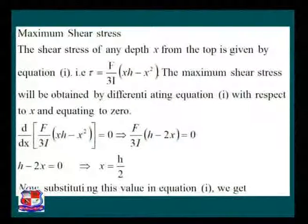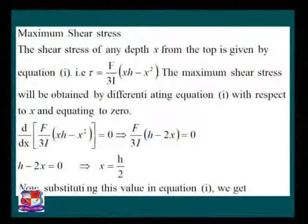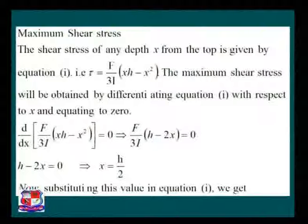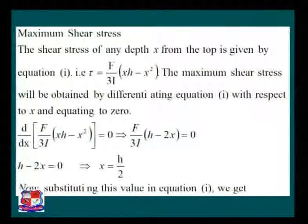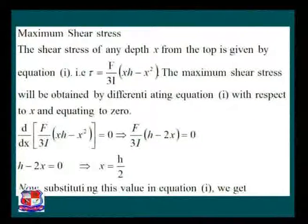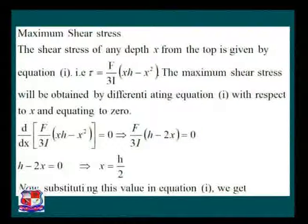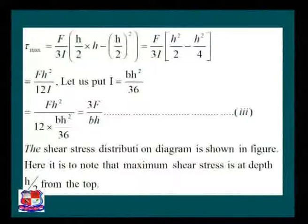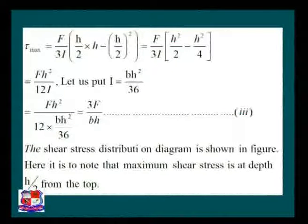Differentiating tau = F/(3I) × [X·H − X²] with respect to X and equating to zero, we get F/(3I) × (H − 2X) = 0. Since F/(3I) is non-zero, we require H − 2X = 0, giving X = H/2. This means the maximum shear stress occurs at half the height of the triangle.